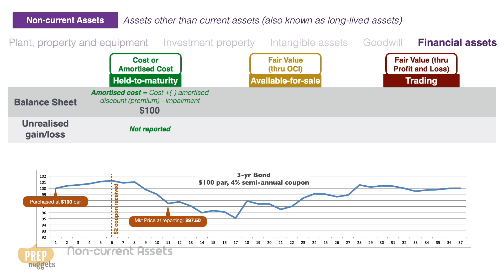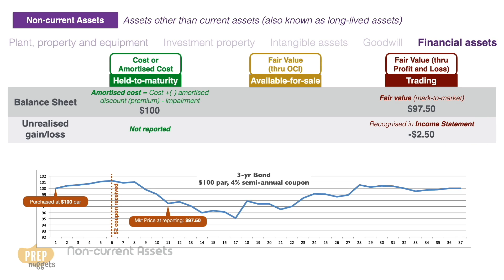Trading securities are measured at fair value, also known as mark-to-market accounting, and unrealized gains and losses are recognized in the income statement. Since the market value of the bond has dropped to $97.50, the book value reported in the balance sheet is $97.50 and the loss of $2.50 is reported in the income statement.